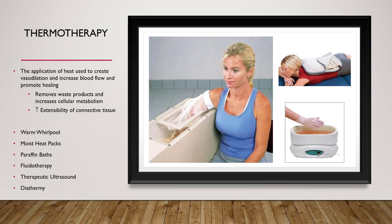Moist heat packs are commercially available and widely used in sports medicine, physical therapy, and athletic training clinics. Most moist heat packs are kept in a unit called a hydroculator, which keeps the water very warm. The packs are taken out and placed inside a terry cloth cover before being placed on the patient. If the terry cloth cover is wet from repeated use, the heat pack can get very hot, so it is important to have a towel on hand. Anyone being treated with a moist hot pack should not sit or lay on the pack, as it can be very difficult for someone in pain to move quickly if it becomes too hot.